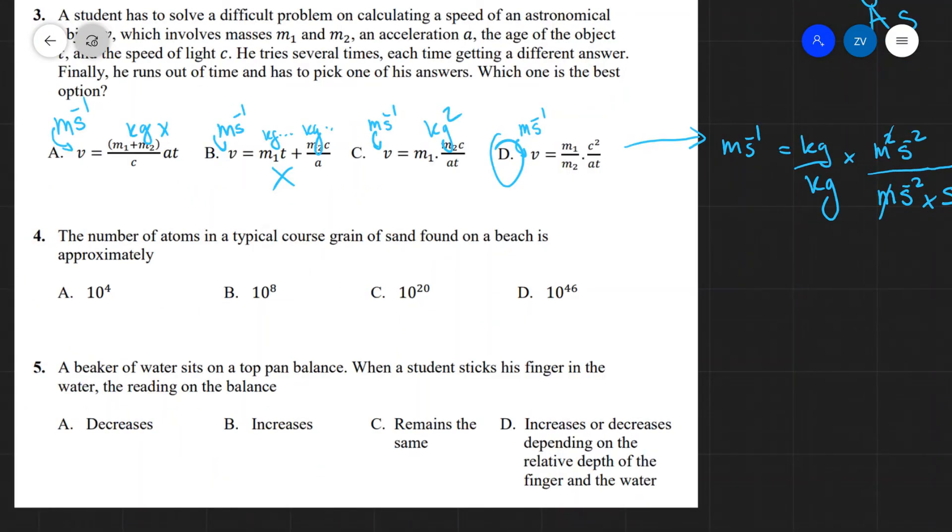Okay guys, well let's have a go at question 4. So the number of atoms in a typical coarse grain of sand found on a beach is approximately.